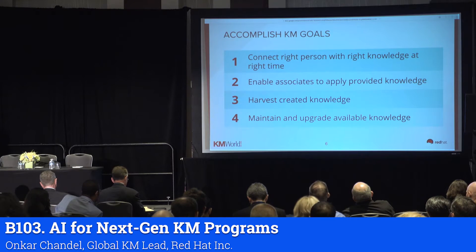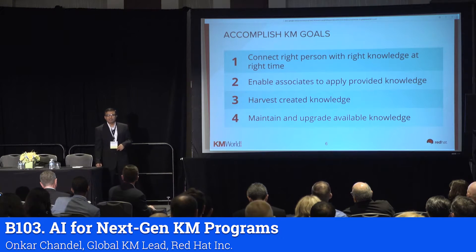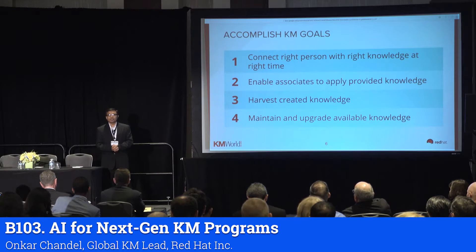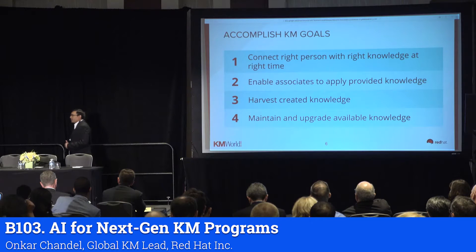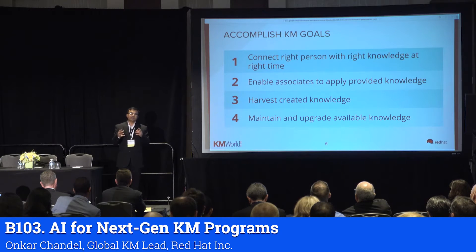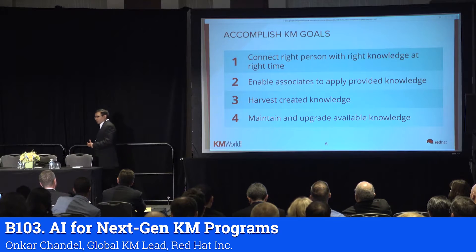The next goal is to enable associates. My requirement is to get to London from here in eight hours. The system says: here is the aircraft, take it and reach London in eight hours. But how do I fly that aeroplane? You have to enable your associates — here is the knowledge, and this is how you can use it. Train those associates to use that knowledge. That's the second goal of knowledge management.